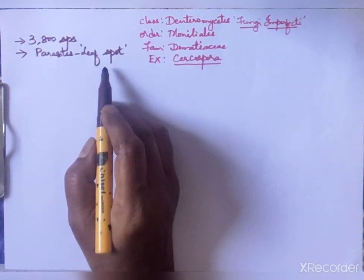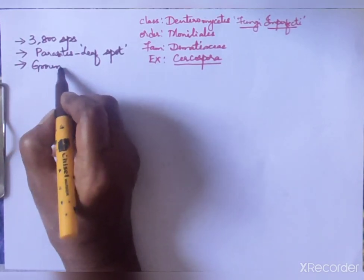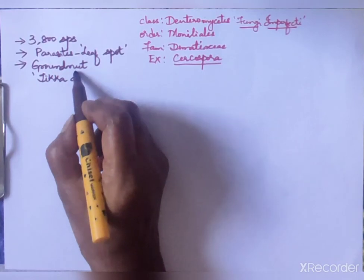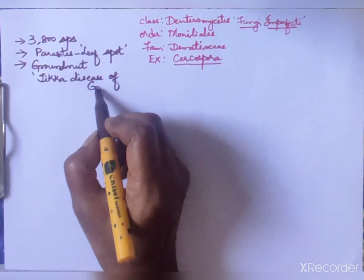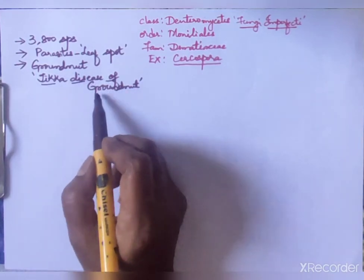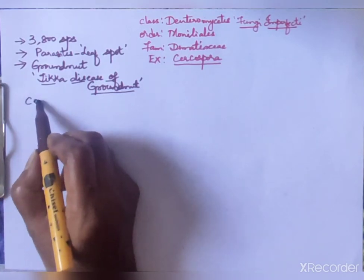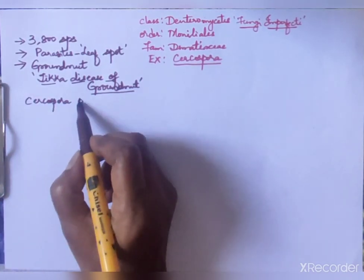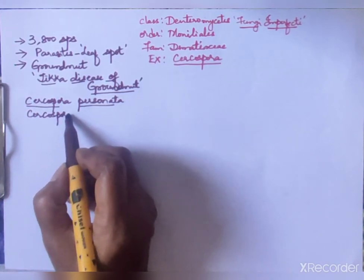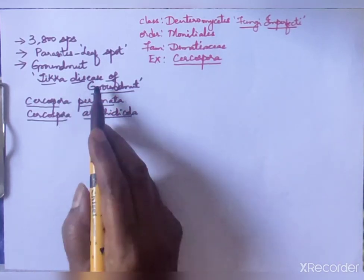The most popular leaf spot disease is seen in the groundnut plant. It causes a well-known serious disease called Tikka disease of groundnut, which is caused by two species of Cercospora: Cercospora personata and Cercospora arachidicola.